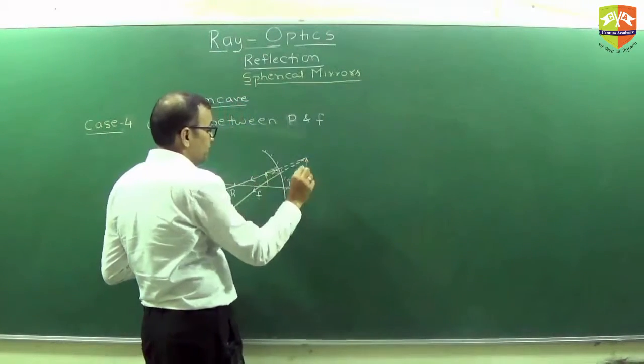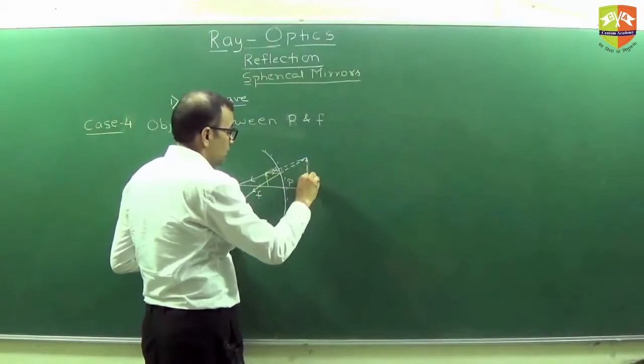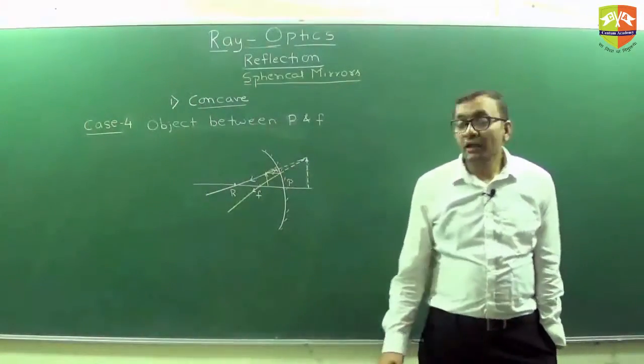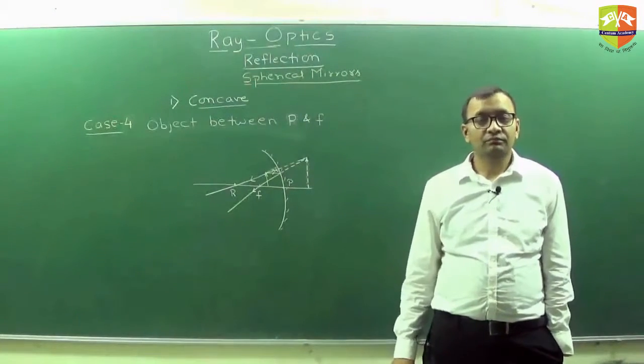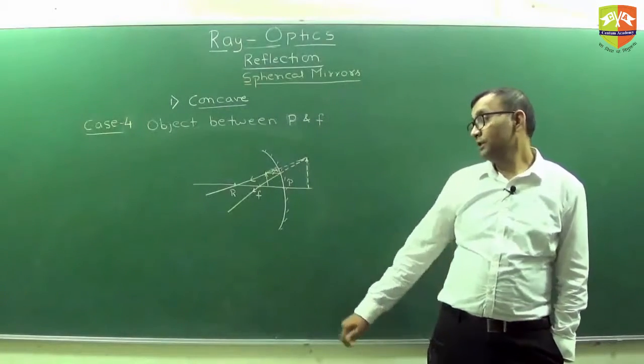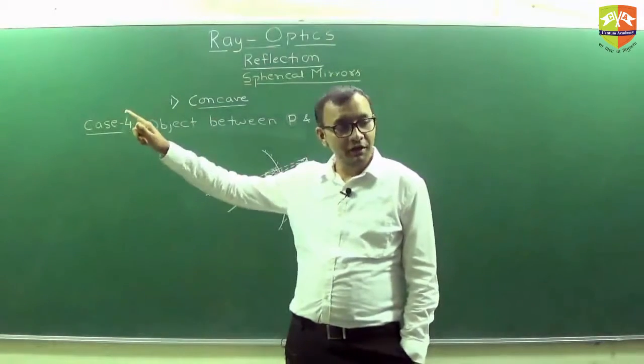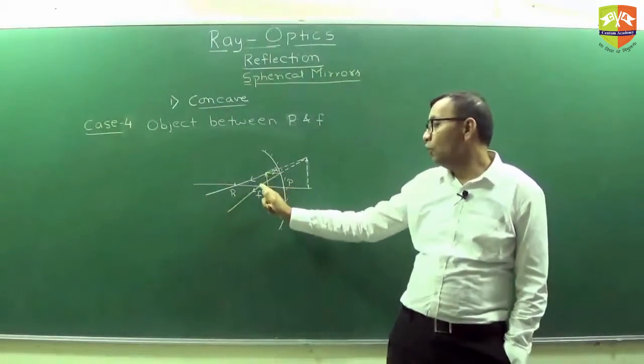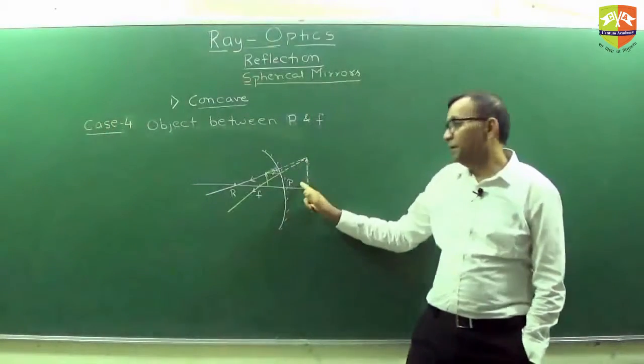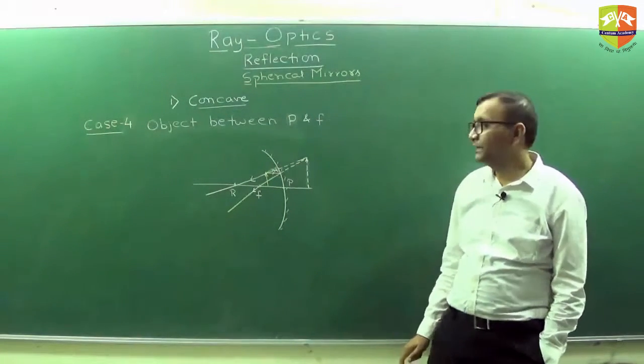So there will be a virtual image, but erect this time. Write down characteristic. So the image will be erect, enlarged and virtual. So just imagine, when it was at focus, the image was at plus infinity. And as soon as you slightly go towards the mirror, the image came from all the way from infinity and appeared here.